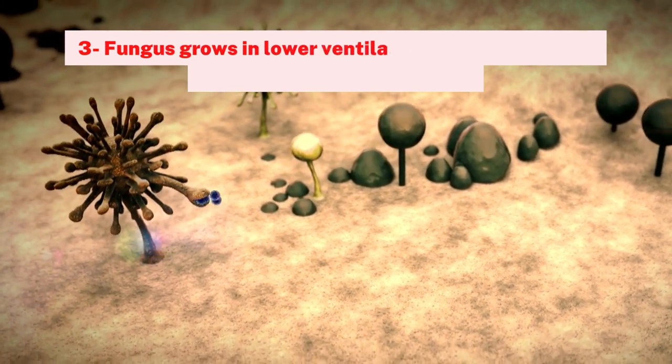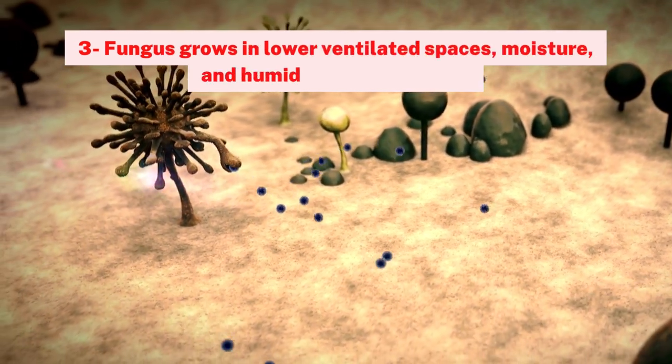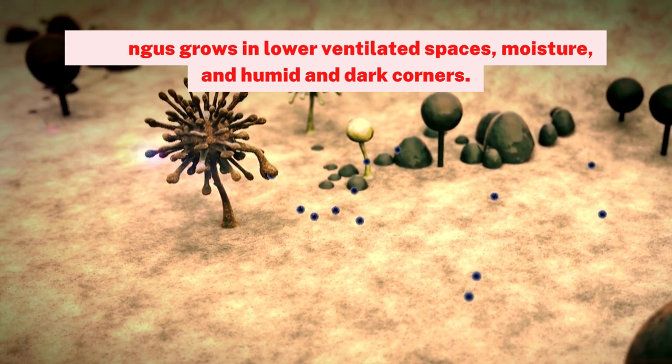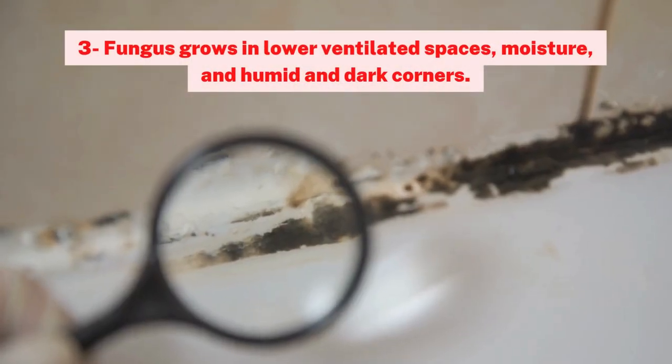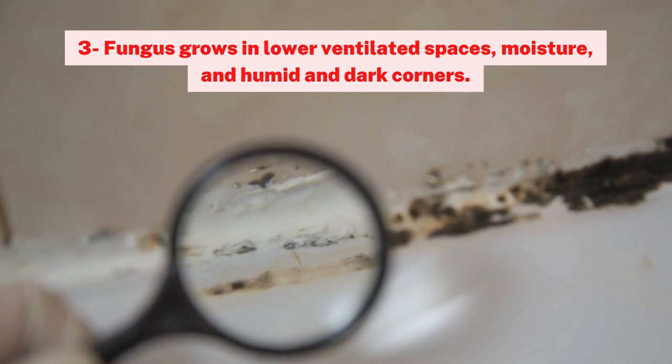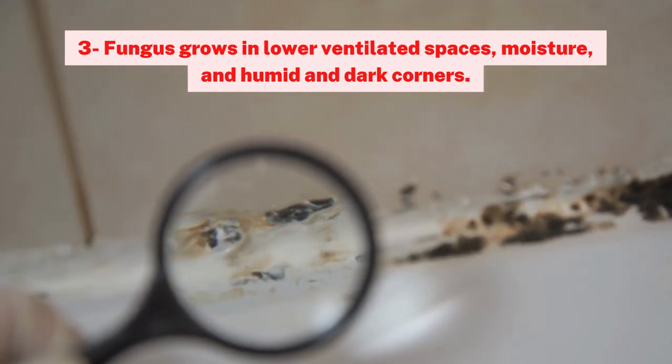Reason 3. Fungus grows in lower ventilated spaces, moisture, and humid and dark corners. Bathroom fungus forms a mold and lives in a drain or pipe. You have to kill them for your safety.